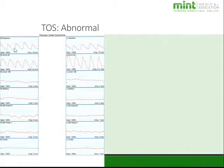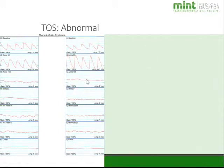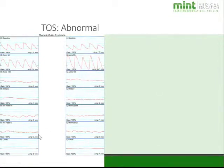Now for an abnormal thoracic outlet case. At baseline, there's a sharp upstroke and notch on both sides. At 90 degrees, notch is still present. But with arms straight overhead, there is almost a complete loss of signal. In military position, the same loss occurs. With head turned right, signal returns slightly but not to normal on the left. With head turned left, the opposite happens — left returns slightly but right disappears. The patient's symptom-provoking position was arms behind her head, and loss of signal was confirmed there as well.